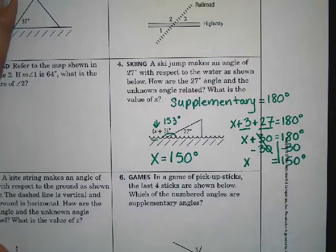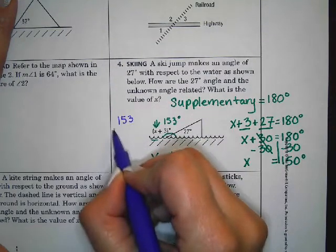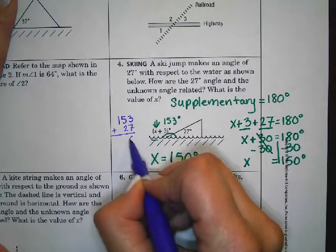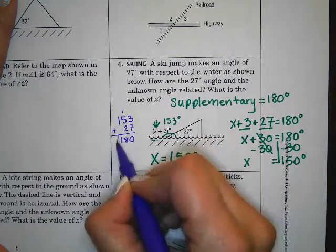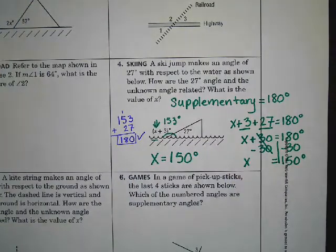So when I'm checking my work, I'm going to take 153 plus 27, and if you notice, it adds up to 180 degrees. So I've checked my work and I know that is correct.